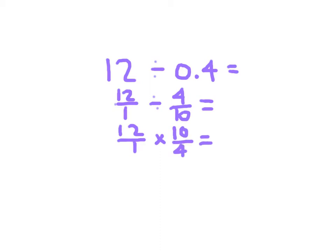Now that I have my multiplication problem, I just multiply them. 12 times 10 is 120 in the numerator. In the denominators, I have 1 times 4, which is 4. My last step is to simplify. 120 divided by 4 is 30.